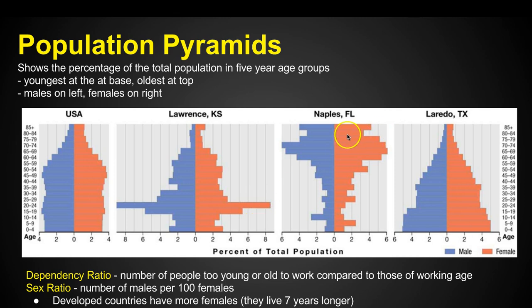Naples, Florida has an upside-down pyramid — not very many young people and a whole bunch of old people. Florida, specifically Naples, is home to a retirement community where people from across the country move because the weather is nice, the beaches and geographic setting are beautiful, and they have a community of people like them. So lots of people retire in their older years to Florida, specifically Naples.